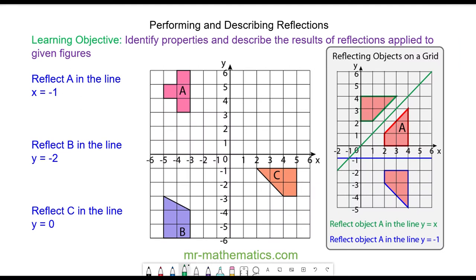Hello and welcome to our lesson on performing and describing reflections on a grid. We're going to begin by reflecting object A in the line x is equal to negative 1.